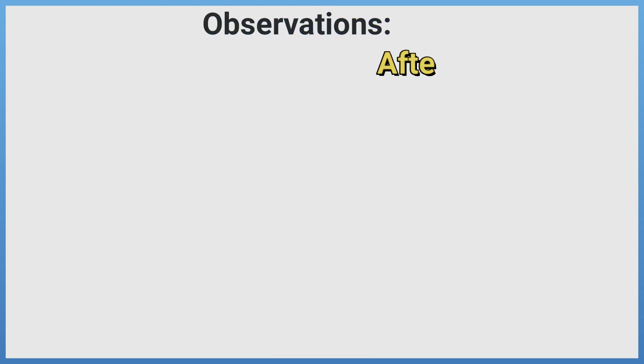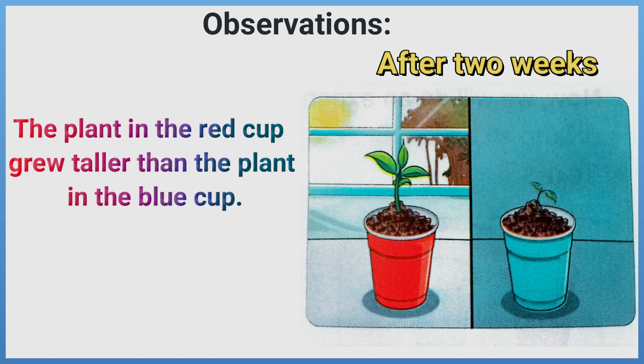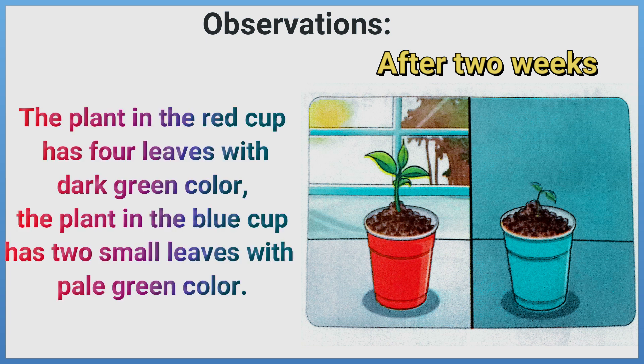Observations. After two weeks, we observe that the plant in the red cup grew taller than the plant in the blue cup. The plant in the red cup has four leaves with dark green color, while the plant in the blue cup has two small leaves with pale green color.